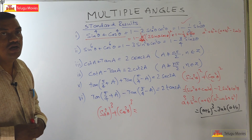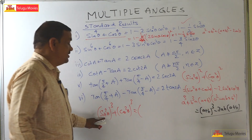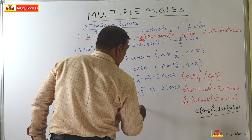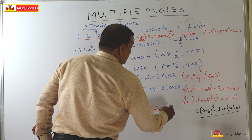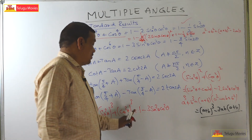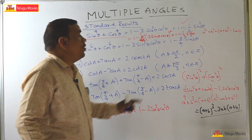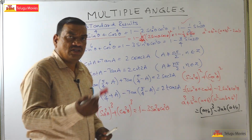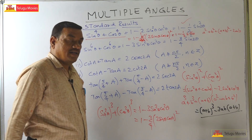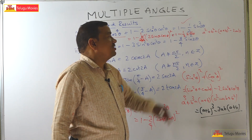Using a³+b³ = (a+b)³ − 3ab(a+b): here a = sin²θ, b = cos²θ, so a+b = sin²θ + cos²θ = 1. Therefore (a+b)³ = 1³ = 1, and 3ab(a+b) = 3sin²θ cos²θ · 1. So sin⁶θ + cos⁶θ = 1 − 3sin²θ cos²θ. Then, since 2sinθ cosθ = sin2θ, we get 3sin²θ cos²θ = (3/4)sin²2θ, giving sin⁶θ + cos⁶θ = 1 − (3/4)sin²2θ.